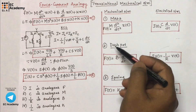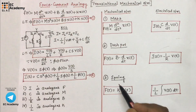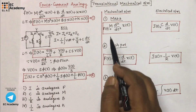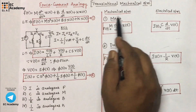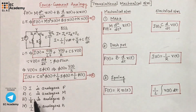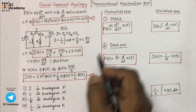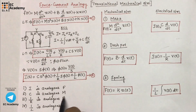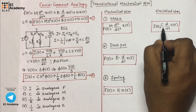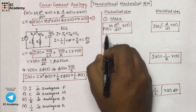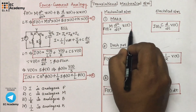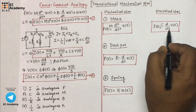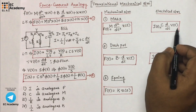Now let us consider the three mechanical elements — mass, dashpot, and spring. Using this analogy concept, we can write equations for the electrical system analogous to the mechanical system. Current is analogous to force, and capacitor is analogous to mass. So the equation F(t) = M·d²x/dt² for a mass in a mechanical system can be replaced by I(t) = C·dV/dt in the analogous electrical system.